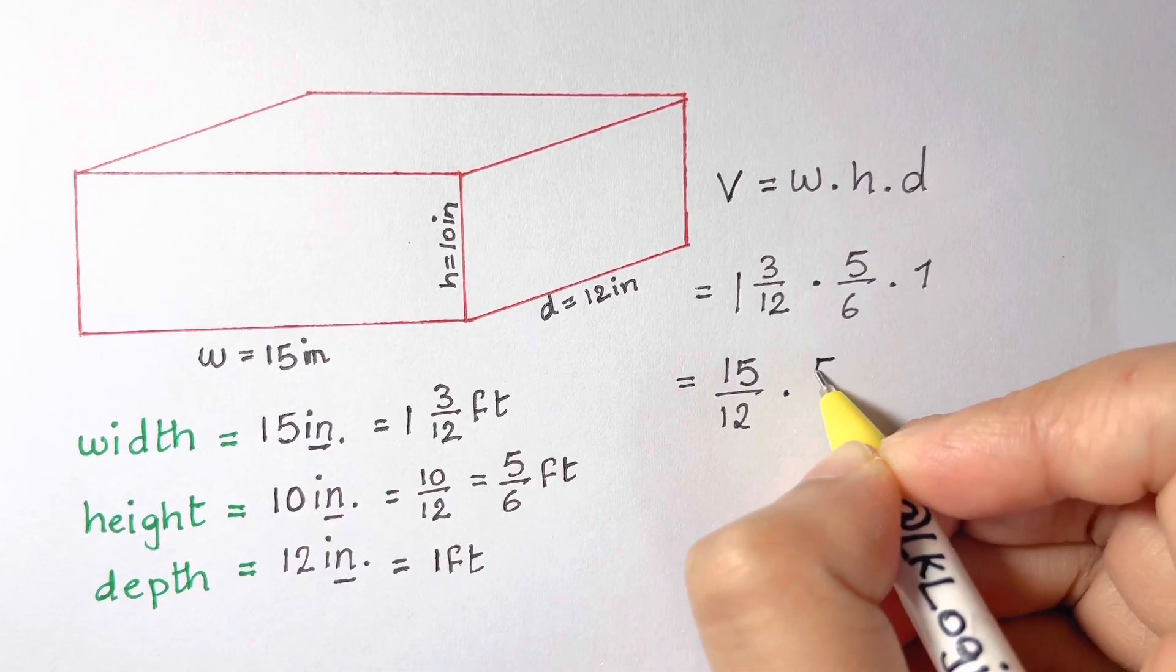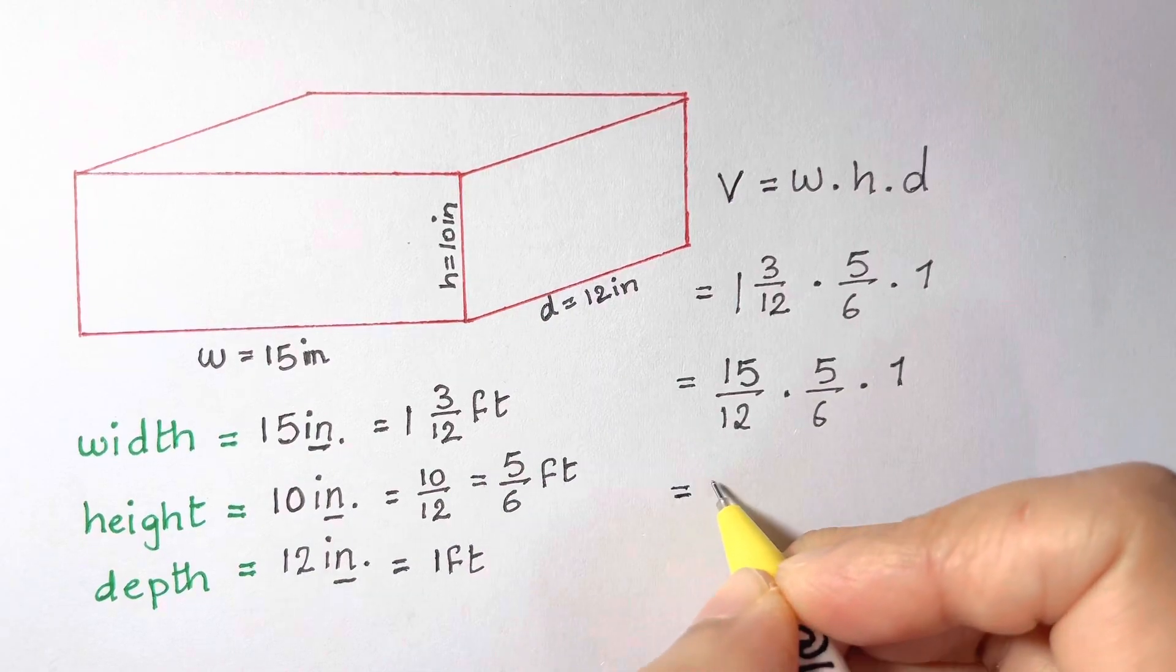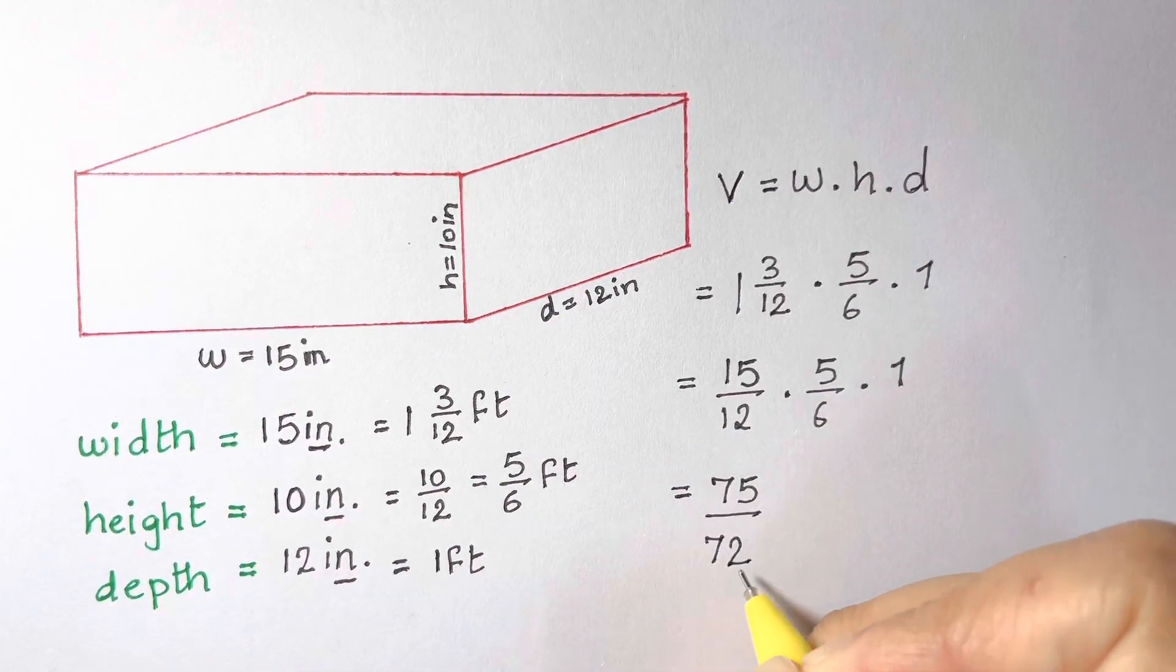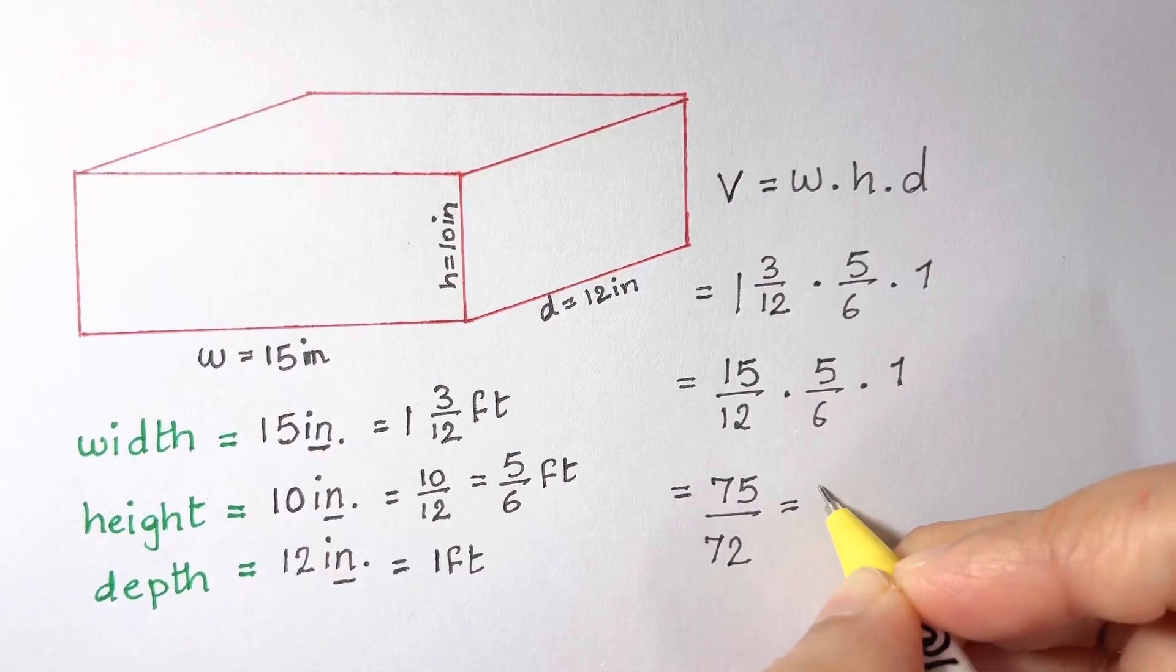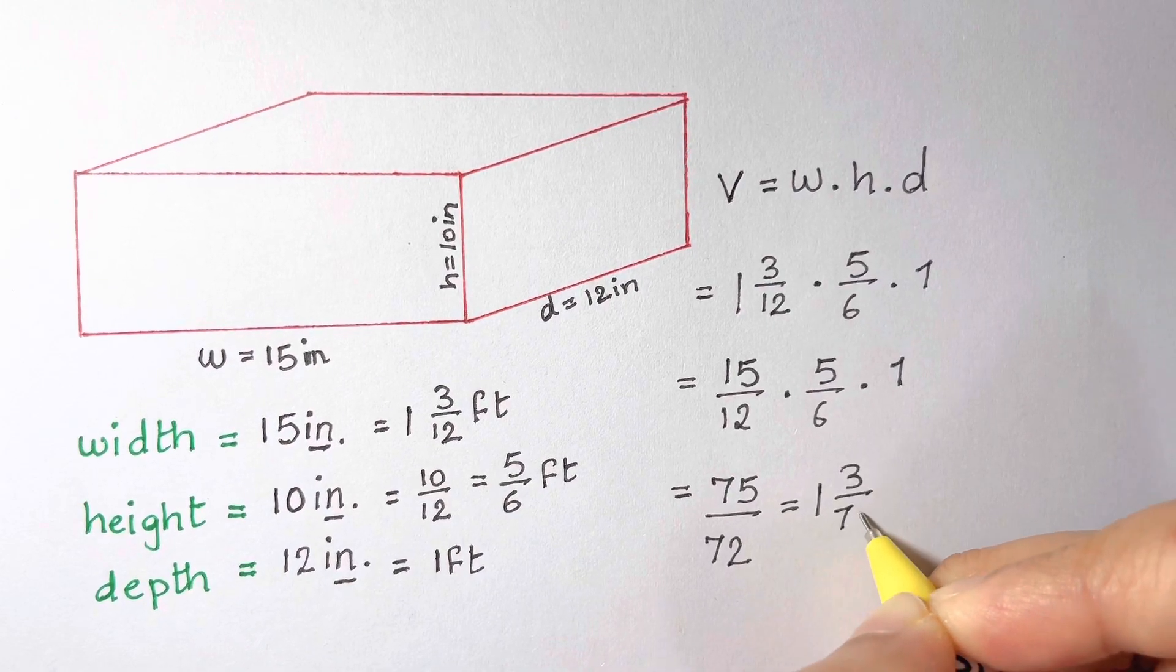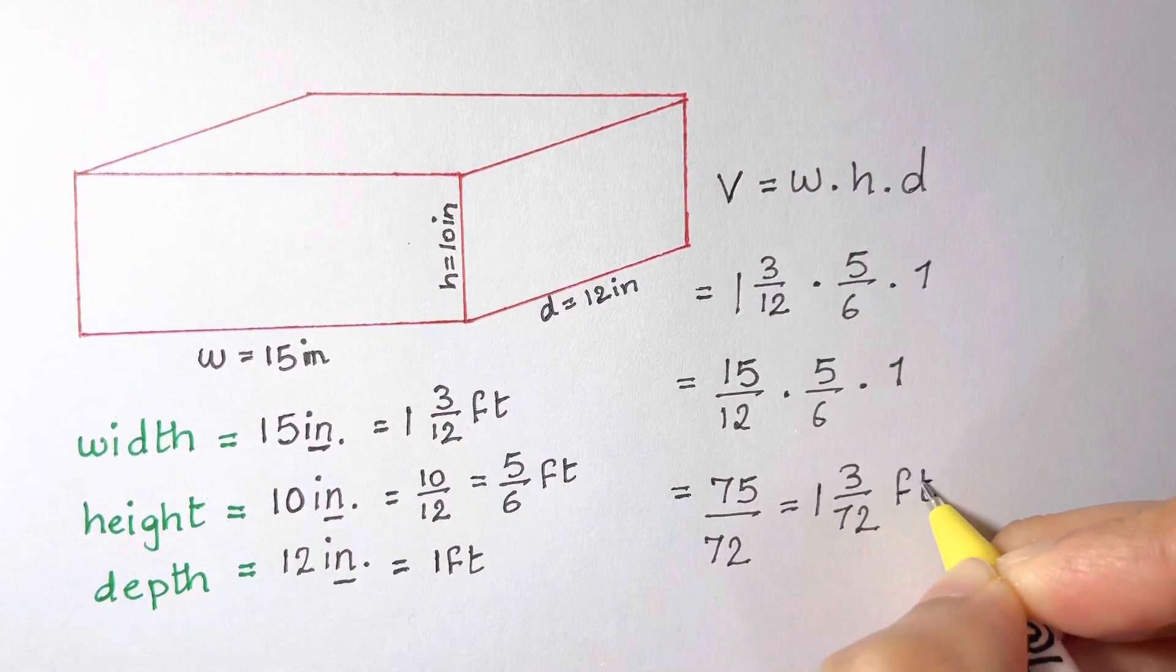So 15 over 12 times five sixths times one is equal to 75 over 72. That's equal to 72 over 72, which is one and three over 72 cubic feet.